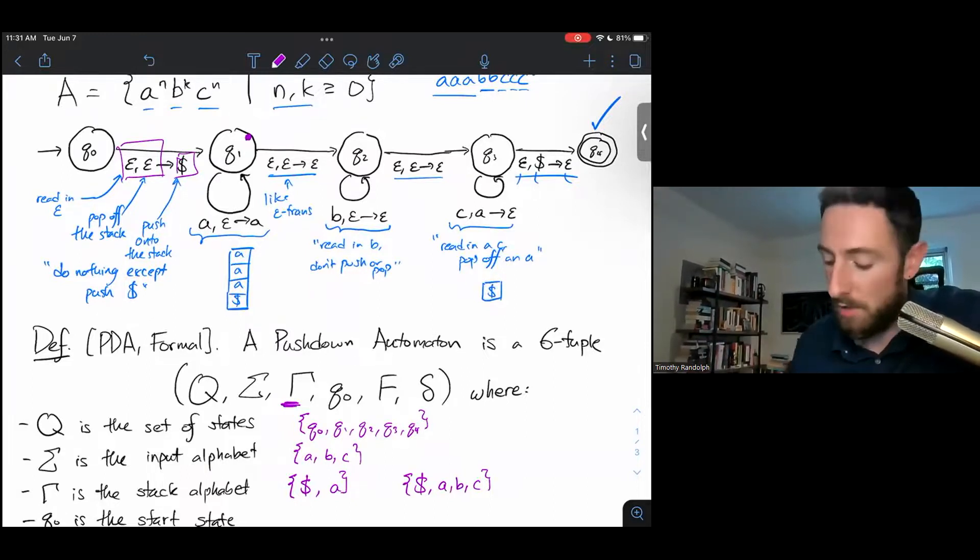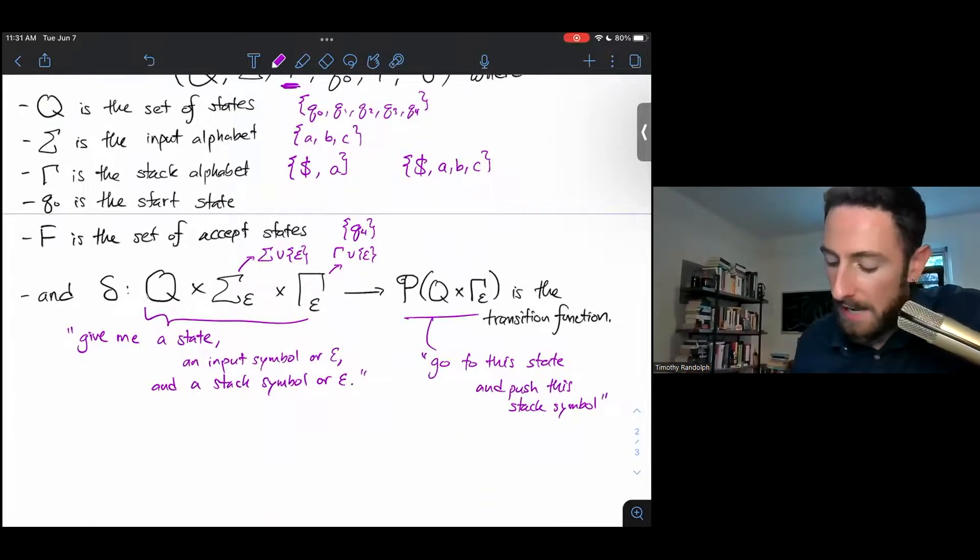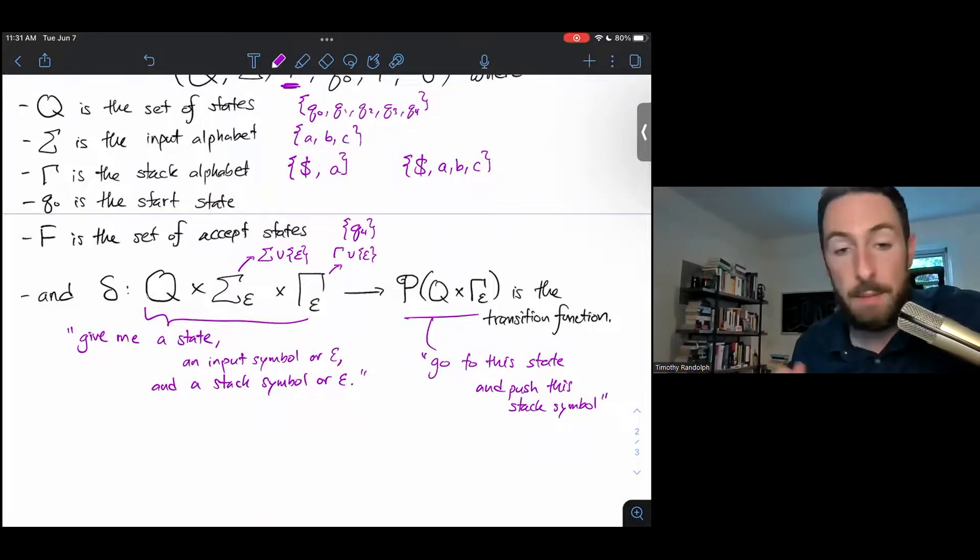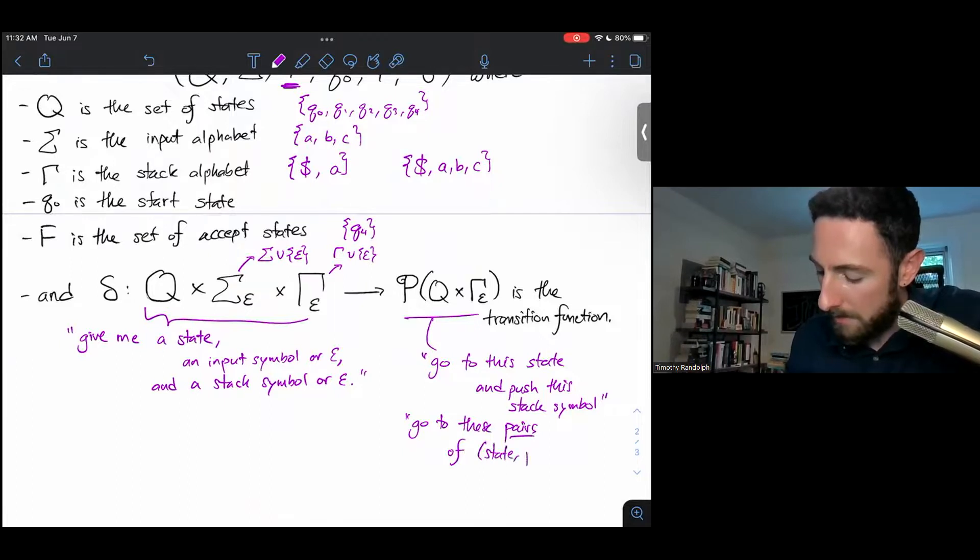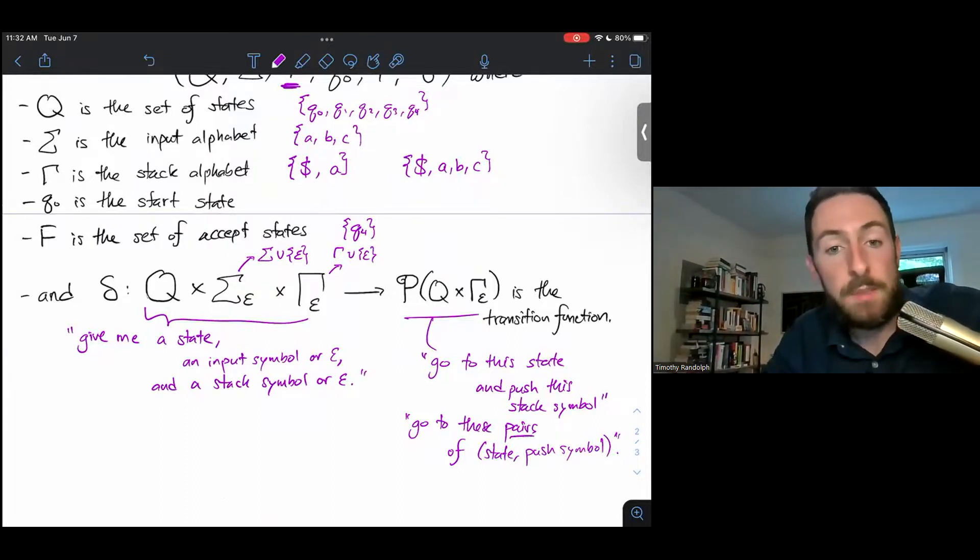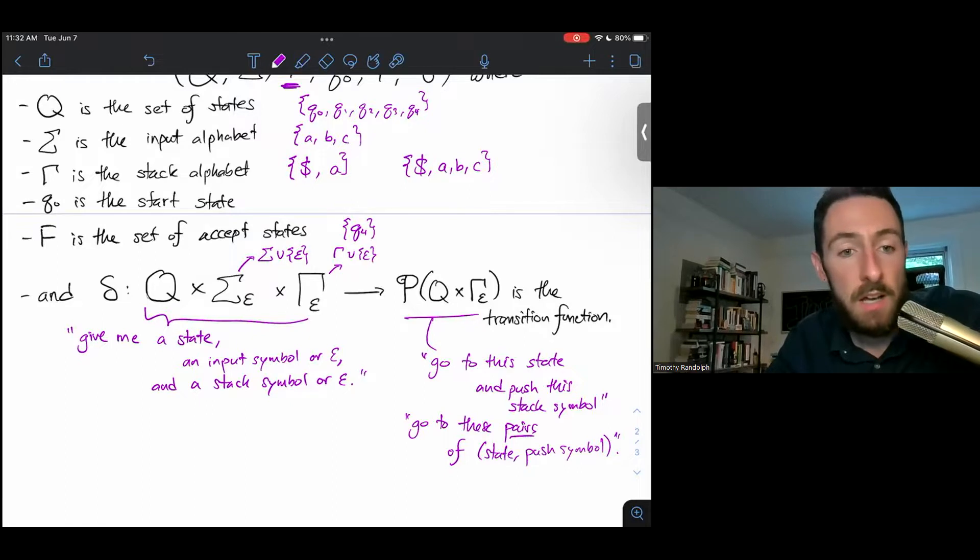The last little wrinkle here is that I haven't mapped to Q cross gamma sub epsilon. I've mapped to the power set. So what I'm really saying is go to these pairs of state, push symbol. So my real output is a list of places to go and things to push because our PDAs are allowed to be non-deterministic. So on a particular input state symbol and stack symbol, my pushdown automaton could tell me to go to multiple different places. And each time I go to those different places, I could push a different symbol onto the stack. That's why we have this power set notation here.